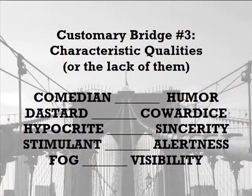Customary Bridge number three: Characteristic qualities or the lack of them. First, comedian — humor: a comedian is known for humor. Two, dastard — cowardice: a dastard, or coward, is known for cowardice. Three, hypocrite — sincerity: a hypocrite lacks sincerity.